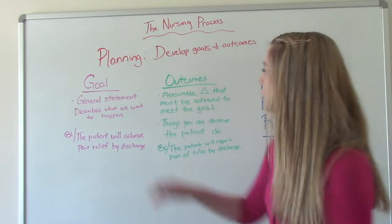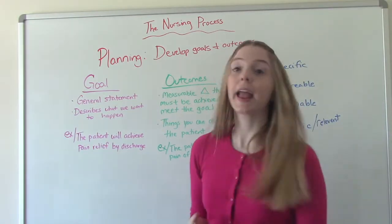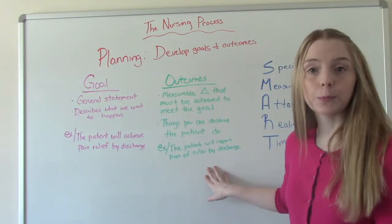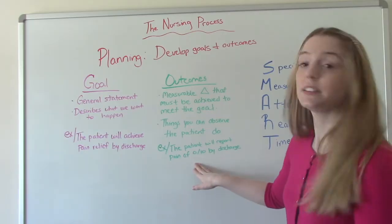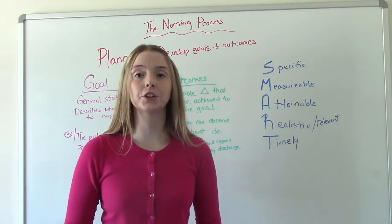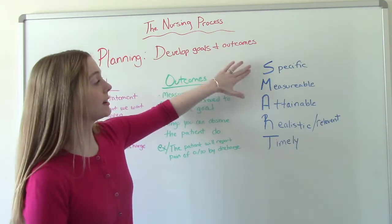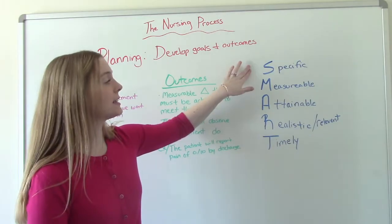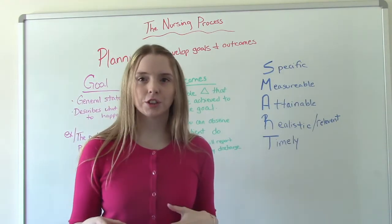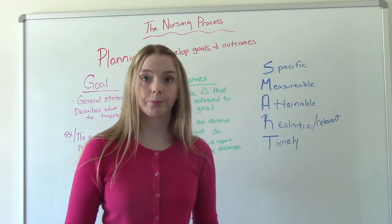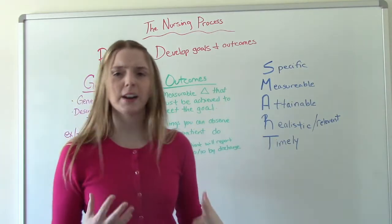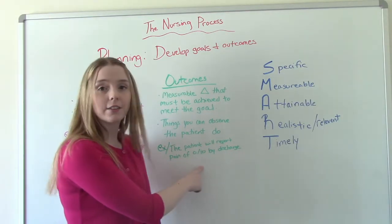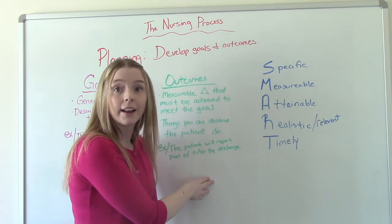For a goal, our example is: the patient will achieve pain relief by discharge. For our outcome, which is more specific: the patient will report a pain of zero out of ten. When writing an outcome statement, make sure you're being SMART about it. SMART stands for Specific, Measurable, Attainable, Realistic and Relevant, and Timely. Specific means do one at a time — you'll think of a lot of them, so just pick one. Measurable means if you can put a number on it, that's ideal. In our example, we said the patient will report pain of zero out of ten — using the pain scale, we can quantify it and put a number on it.